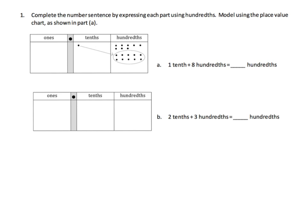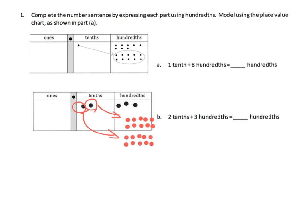Here they want us to specifically use the place value chart. We've got 2 tenths and 3 hundredths — skipping the example that's already done. We place 2 tenths and 3 hundredths, then cash in each tenth for 10 hundredths: 1, 2, 3, 4, 5, 6, 7, 8, 9, 10. We do that a second time for the other tenth. The tenths have been exchanged for hundredths, so we had 2 tenths plus 3 hundredths and now we can see that we ended up with 23 hundredths.